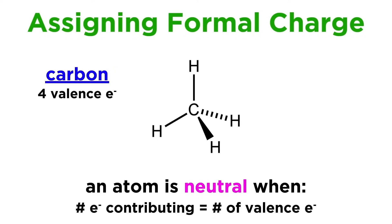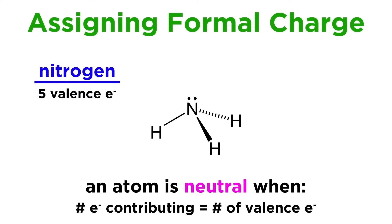For example, carbon has four valence electrons, so when it makes four bonds it contributes one electron to each, and is thus neutral. Nitrogen has five valence electrons, so when it makes three bonds and has one lone pair, it is neutral.